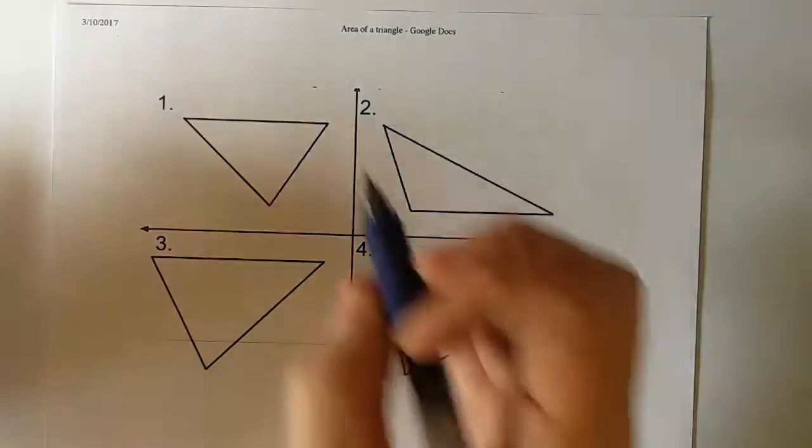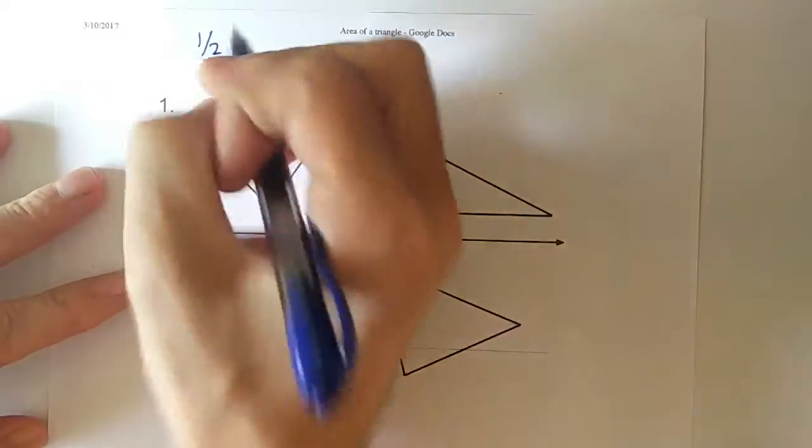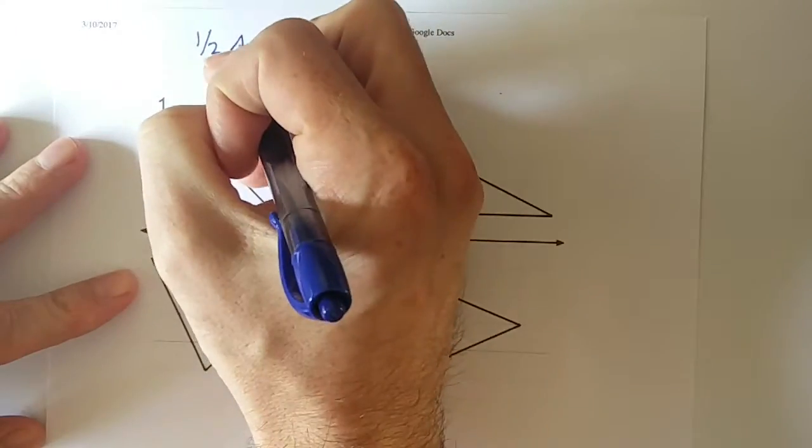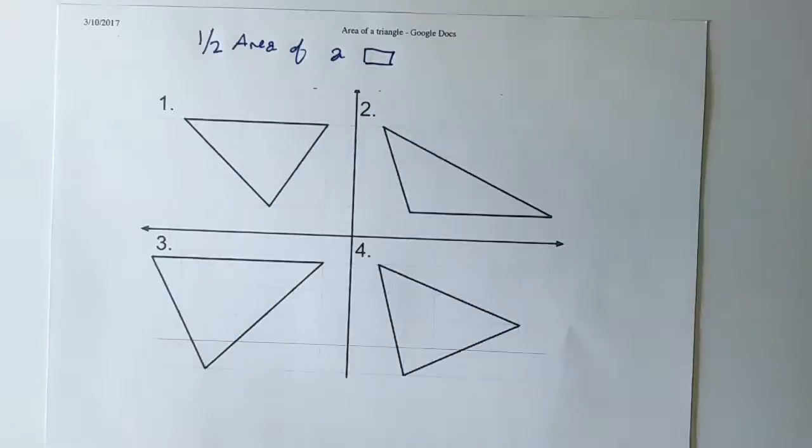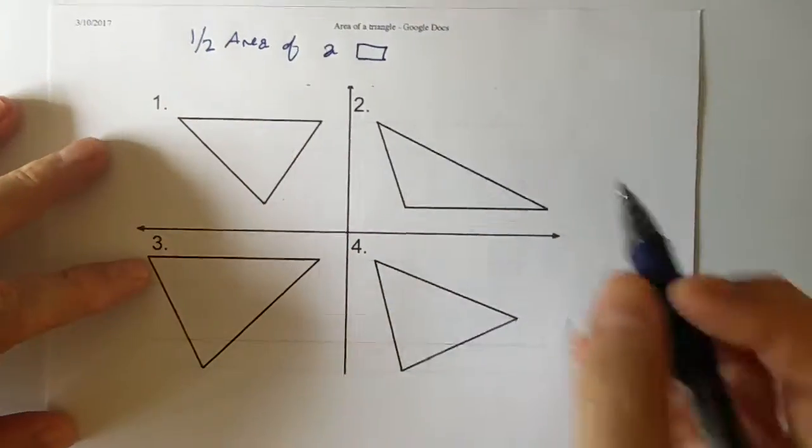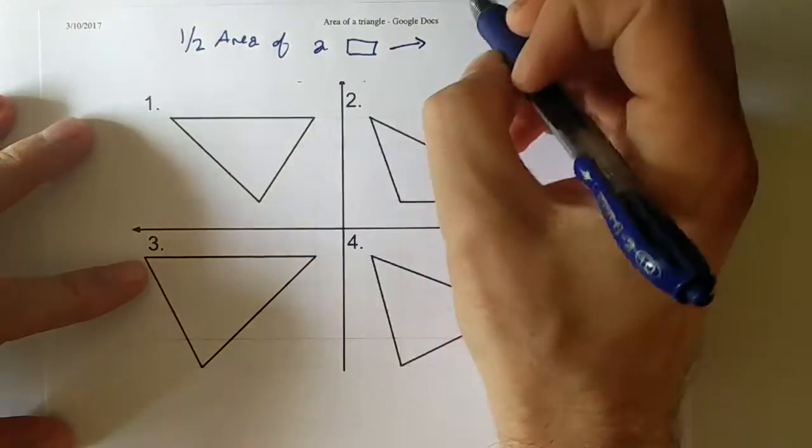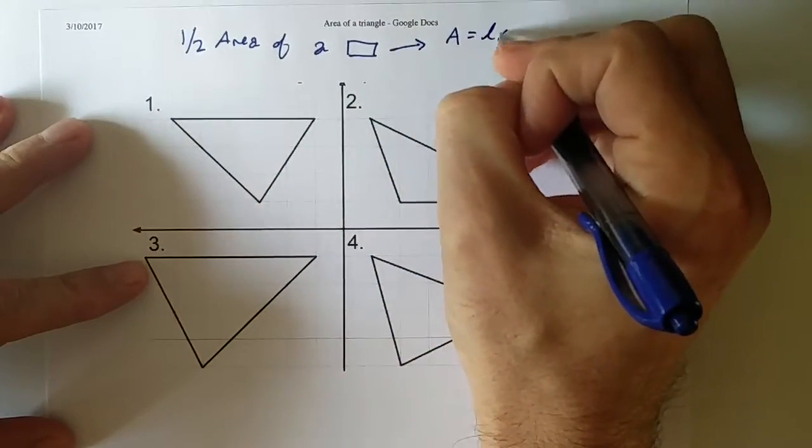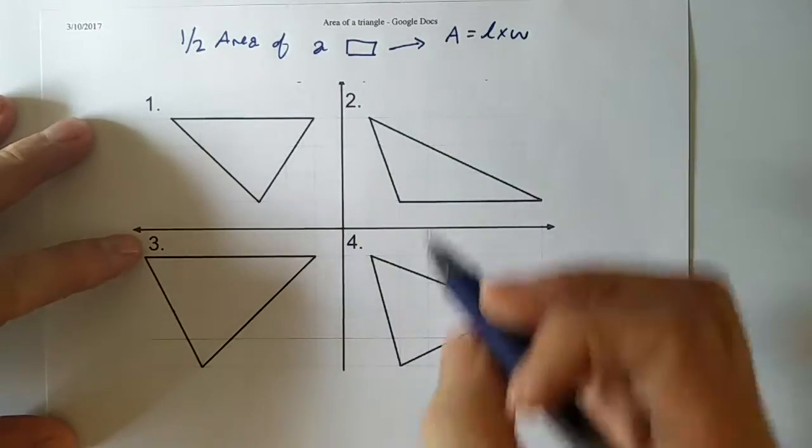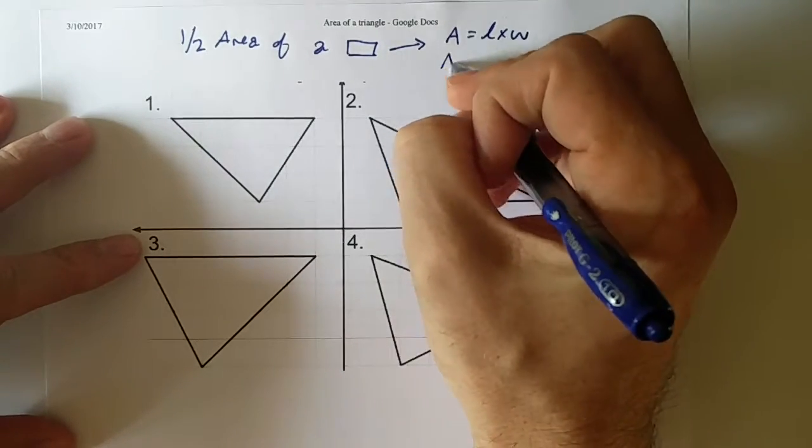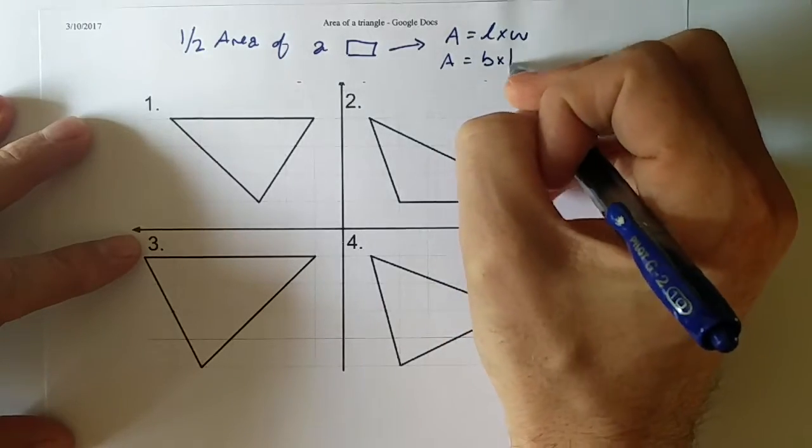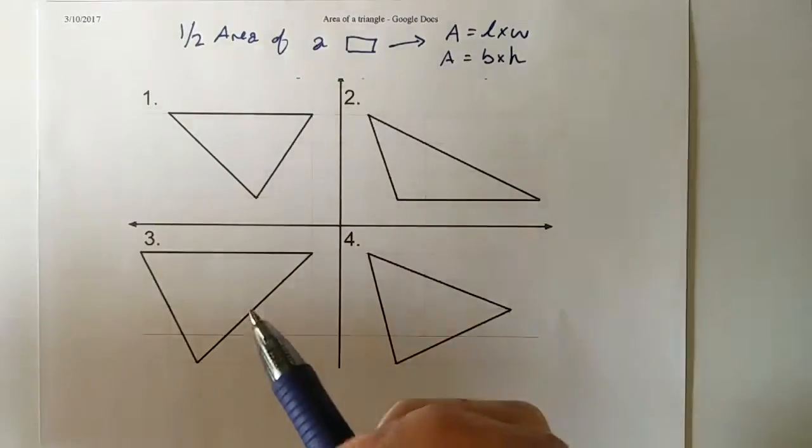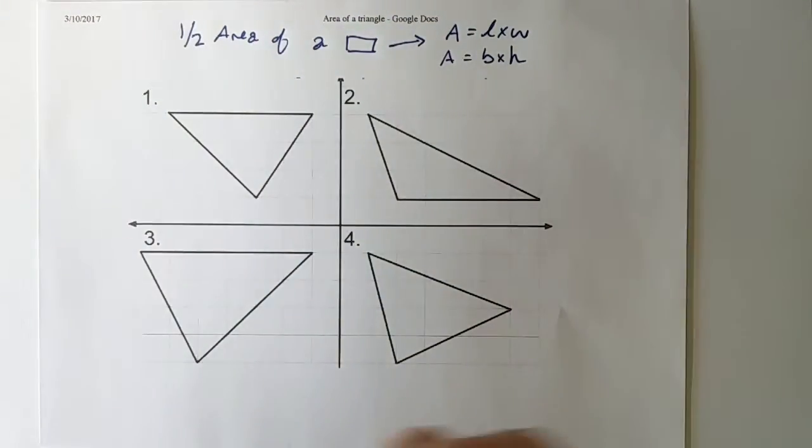All triangles are going to be half of the area of a rectangle. So half the area of a rectangle. One thing we talked about in class was that the area of a rectangle is, of course, length times width, but we can also think of it as the base of the rectangle times the height of the rectangle. And of course, that's when we get into the half of the base times height that you all already know.